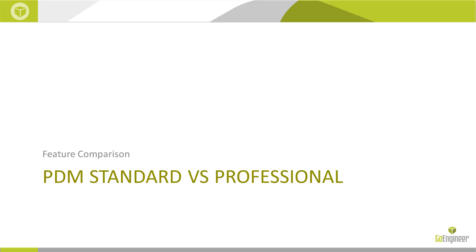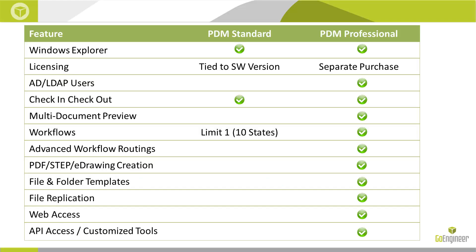Let's now compare the capabilities between SOLIDWORKS PDM Standard and PDM Professional. PDM Standard and PDM Professional share the same underlying product architecture, with PDM Standard having a restricted set of capabilities while providing a straightforward upgrade path for customers who start on PDM Standard and later need to take advantage of PDM Professional functions. Both systems share the same user interface, both in Windows Explorer and inside of SOLIDWORKS, so the user experience is completely consistent between the two platforms.